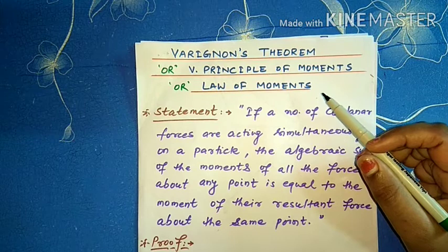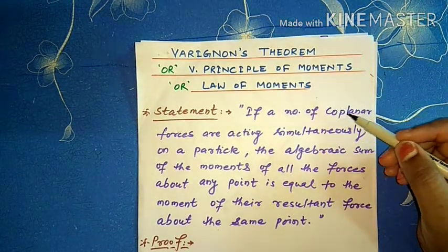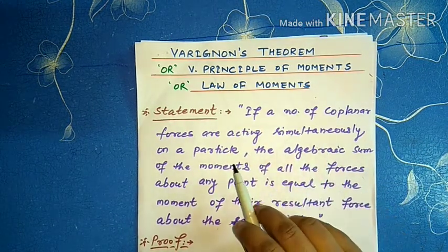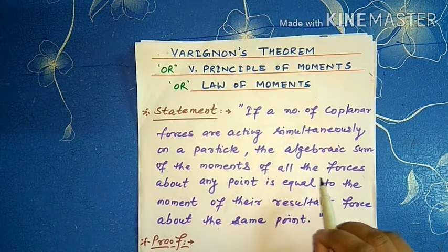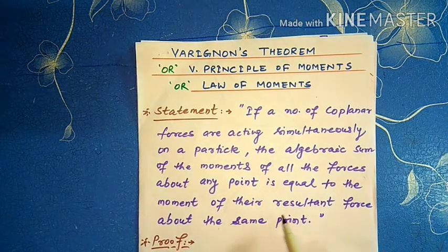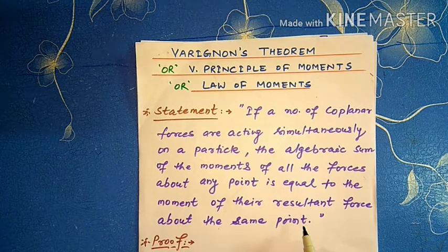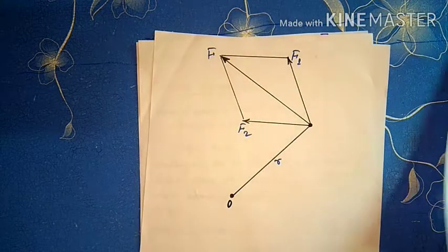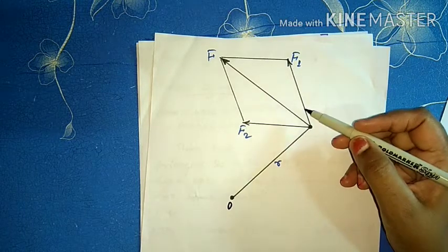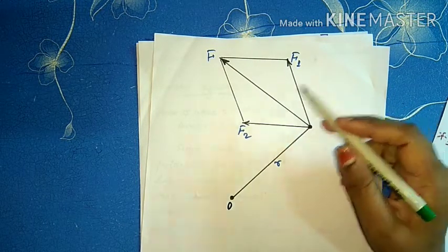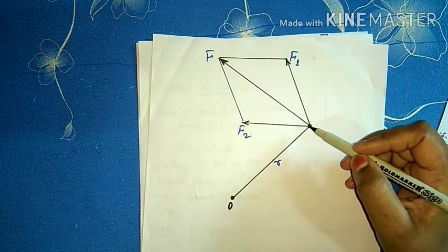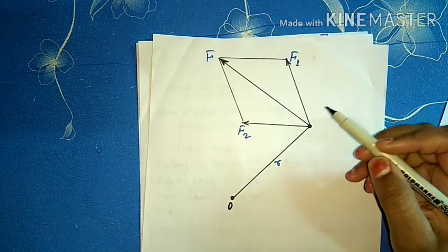First of all, what is the statement of Varignon's theorem? If a number of co-planar forces are acting simultaneously on a particle, the algebraic sum of the moments of all the forces about any point is equal to the moment of their resultant force about the same point. That is, यदि कई co-planar forces एक particle पर एक साथ कार्य कर रहे हों, तो किसी भी बिंदू के about, सभी बलों के moments के algebraic sum, उनके resultant force के moment के बराबर होते हैं।